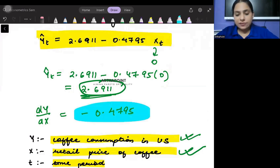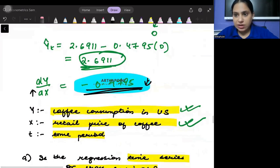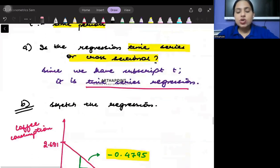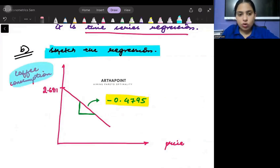It says that if the price of coffee increases by one unit, then on average, coffee consumption will decrease by 0.4795 units. So if I were to sketch this, the question is asking to sketch, so I have taken coffee consumption on the Y-axis.